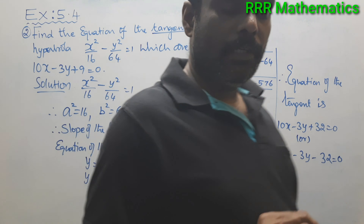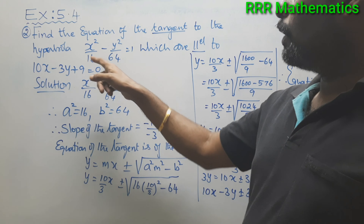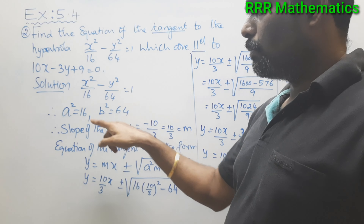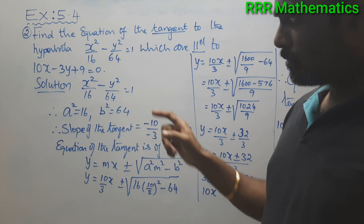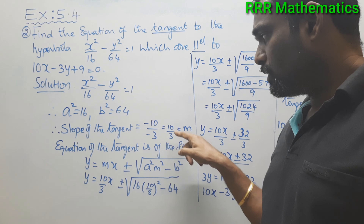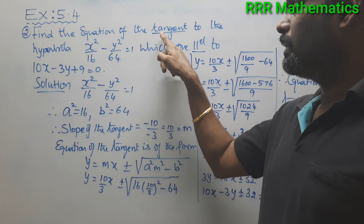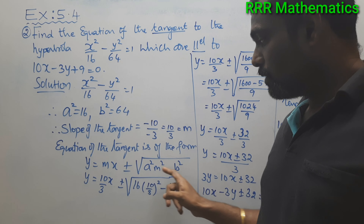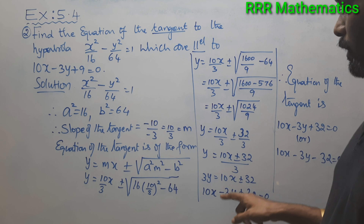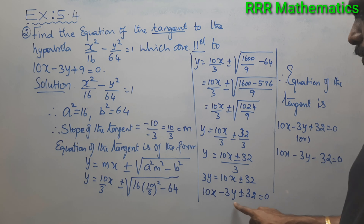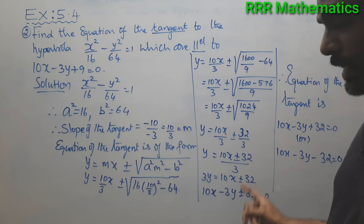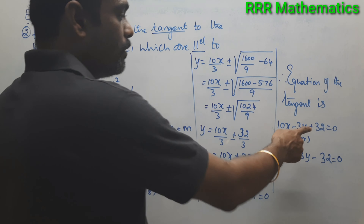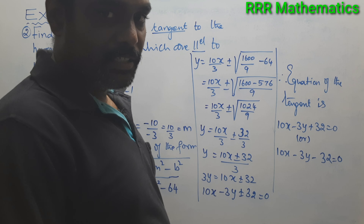Very simple. We wanted to find the equation of the tangent to the hyperbola parallel to the given straight line. From the hyperbola we get a² = 16, b² = 64, and from the straight line we find slope m = 10/3. Replacing m, a², and b² in the tangent formula and simplifying, we get 10x − 3y ± 32 = 0, giving tangents 10x − 3y + 32 = 0 and 10x − 3y − 32 = 0.